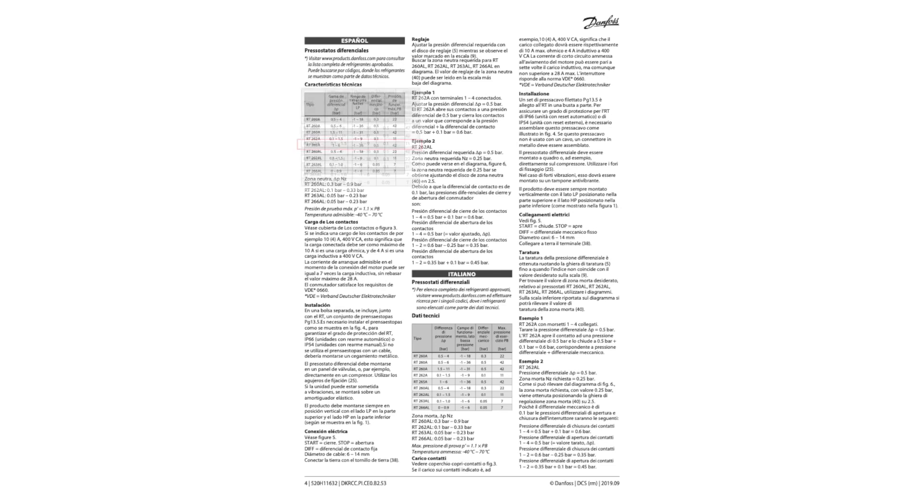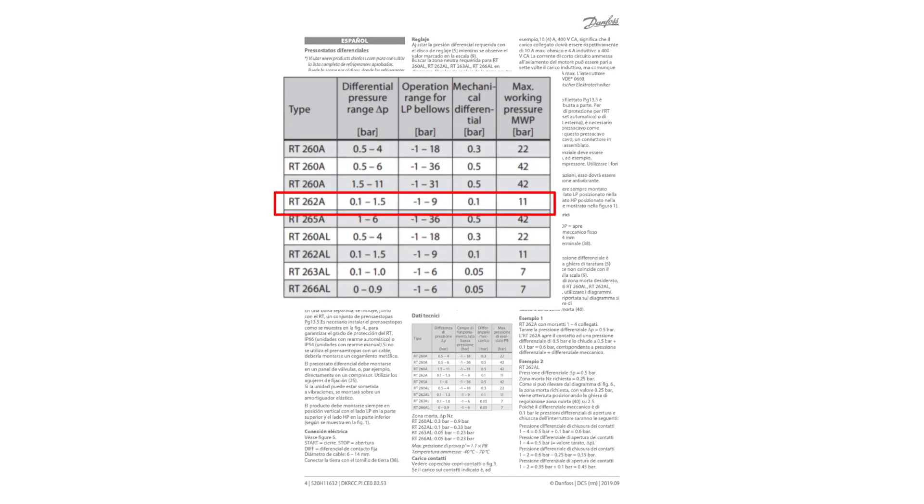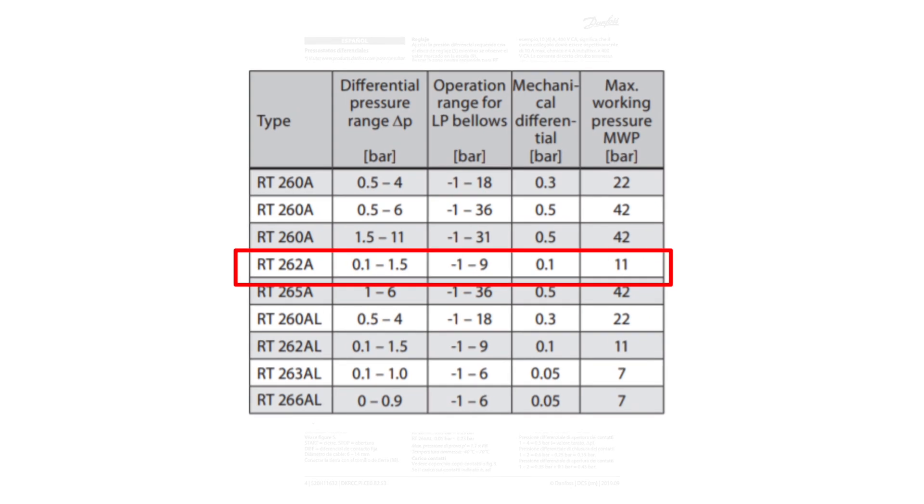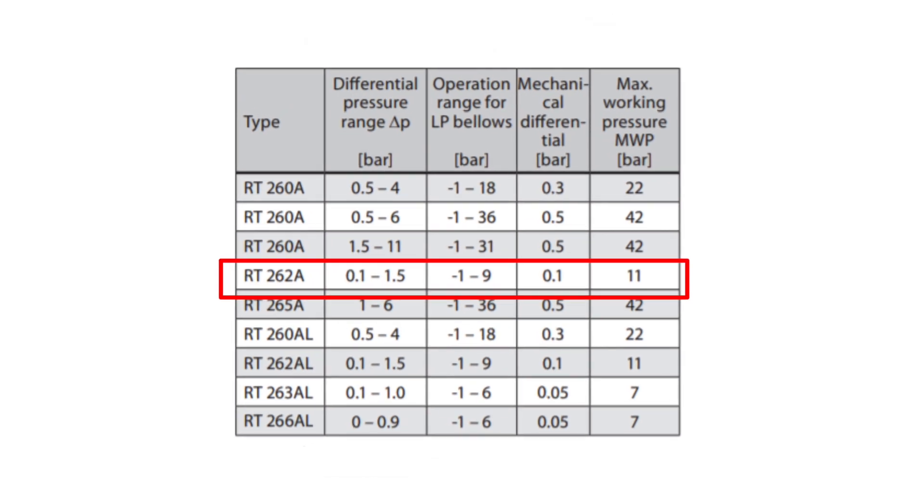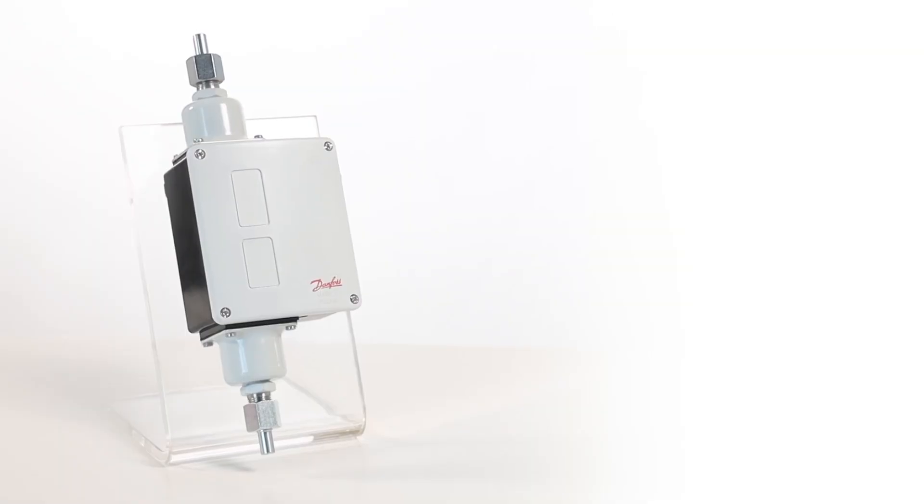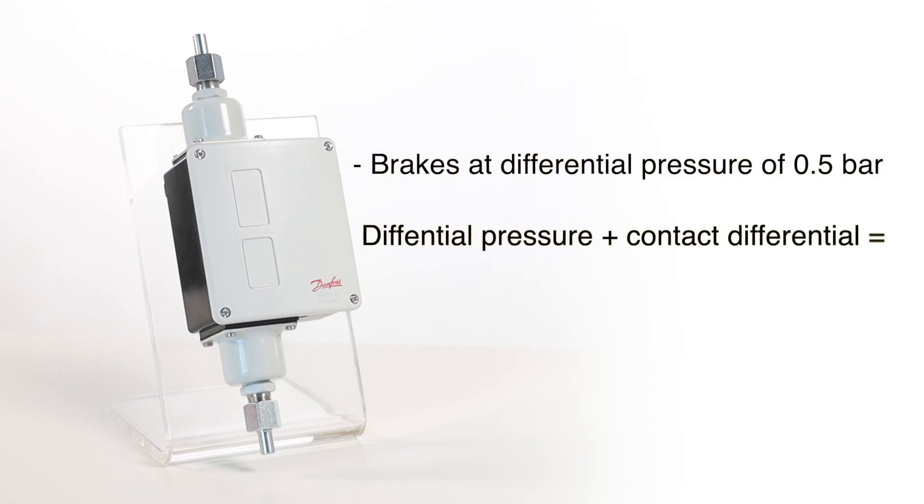In the instructions, you will find the table where you can read which mechanical differential level corresponds to the required levels needed. The RT262A breaks at a differential pressure of 0.5 bar and makes a differential pressure plus contact differential equal 0.5 bar plus 0.1 bar equaling 0.6 bar.